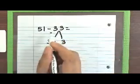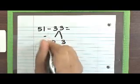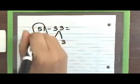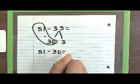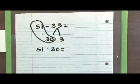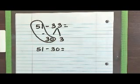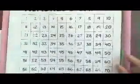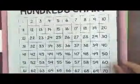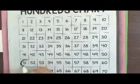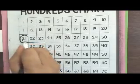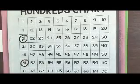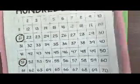Now we subtract each number. First we take 51 minus 30. If students need to use their 120s chart, that is fine. We find 51, and since 30 has three tens — 10, 20, 30 — we count back three rows and end up at 21. So 51 minus 30 is 21.